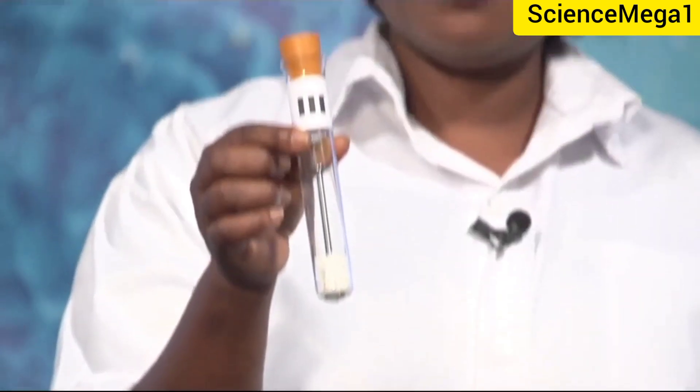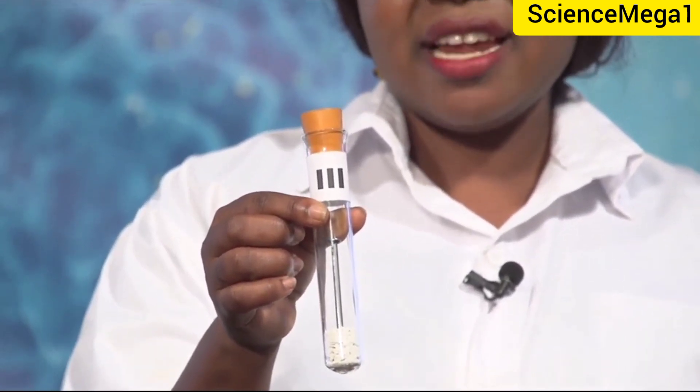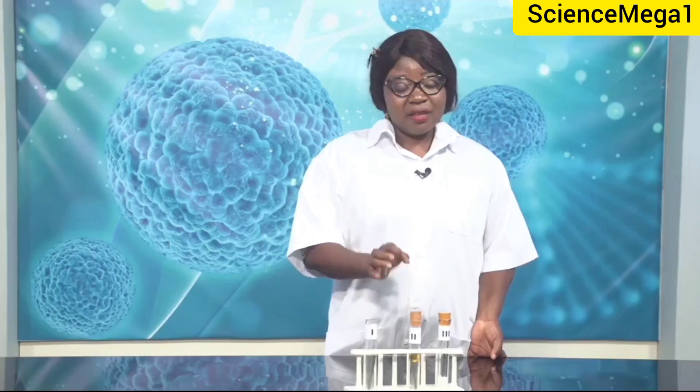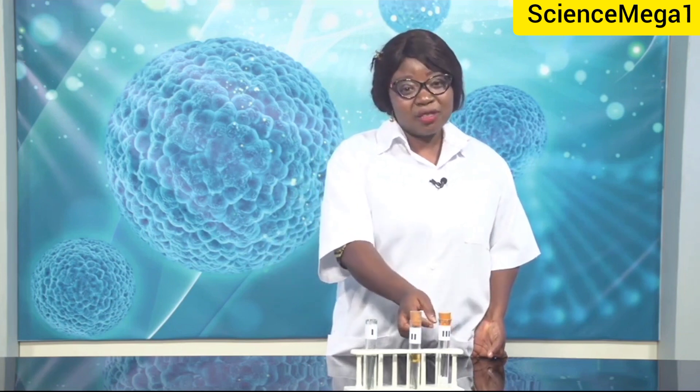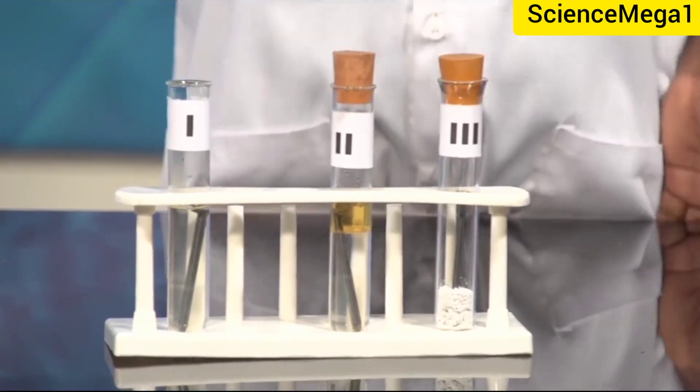Some anhydrous calcium chloride has been put in test tube three and a nail placed in it. The tube has been corked. The anhydrous calcium chloride acts as a drying agent to remove any moisture from the tube, meaning test tube three is subjected to only air but no water or moisture.